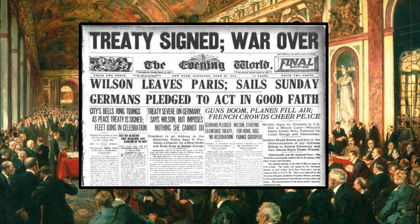Germany signed the Treaty of Versailles under protest, and the United States did not ratify the treaty. France and Britain at first tried to enforce the treaty, but over the next several years a number of modifications were made. Germany ignored the limits that the treaty placed on its rearmament. Payment of reparations proved ruinous, and the attempt was abandoned after the advent of the Great Depression. The League of Nations lasted for 26 years and had some initial successes but failed to advance a more general disarmament or to avert international aggression and war.